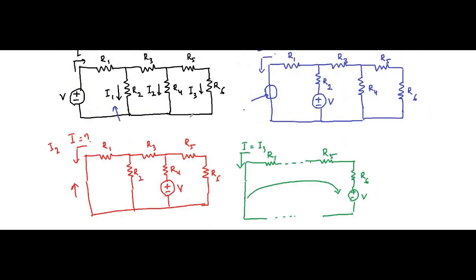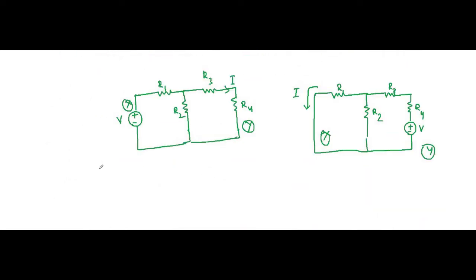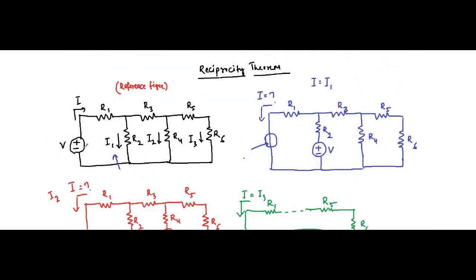Another important point: reciprocity theorem is only applicable for single source networks — that is, networks consisting of a single voltage source. In the case of multiple source networks this theorem will not be valid. This is one of the limitations of reciprocity theorem. It is useful whenever you encounter a circuit with a single voltage source where its position is interchanged and you need to quickly determine the current in the branch where the source was initially present.